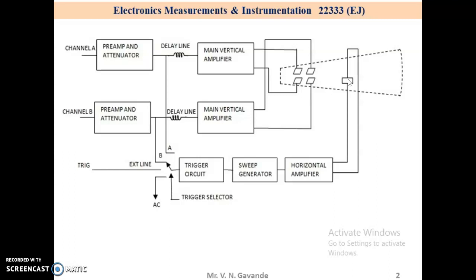In a dual trace CRO you cannot see both the signals simultaneously stable on a CRO screen. In this case it is possible, and so the CRT is quite bigger and heavy and also expensive than dual trace CRO.